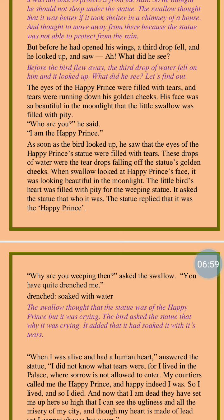'Who are you?' said the swallow — 'he' again refers to the swallow bird. The Happy Prince replied, 'I am the Happy Prince.' The drops of water were tear drops falling off the statue's golden cheeks. When the swallow looked at the Happy Prince's face, it looked very beautiful in the moonlight, and the little bird's heart filled with pity for the weeping statue. The statue replied that it was the Happy Prince. Then the swallow asked again, 'Why are you weeping? You have quite drenched me.' Drenched means soaked with water — the swallow bird got wet.